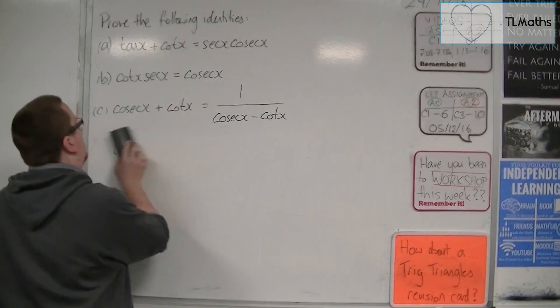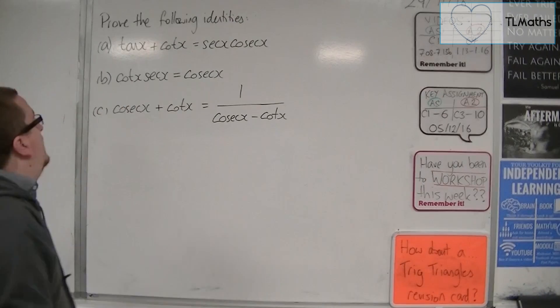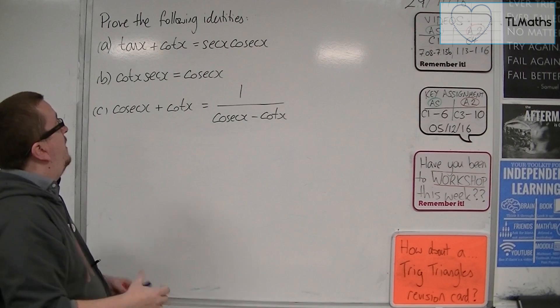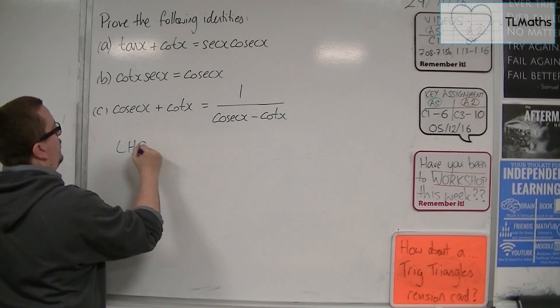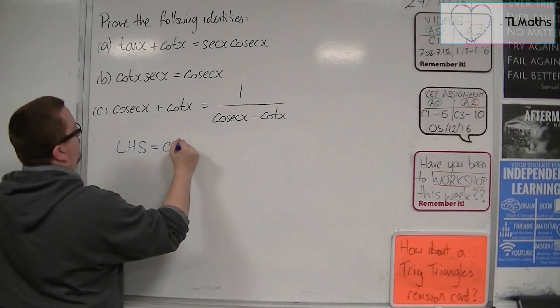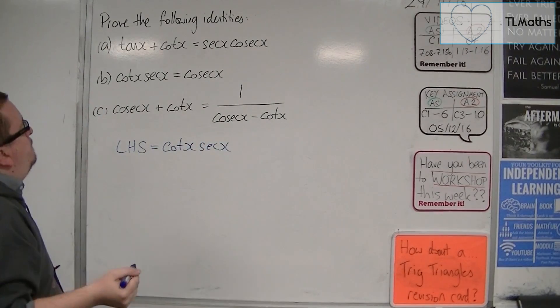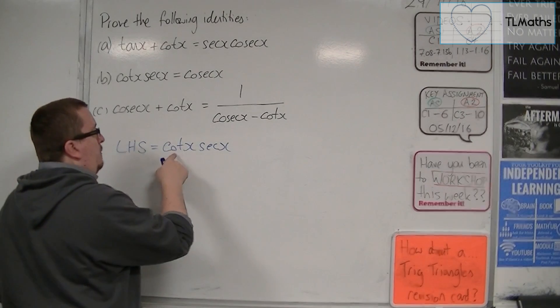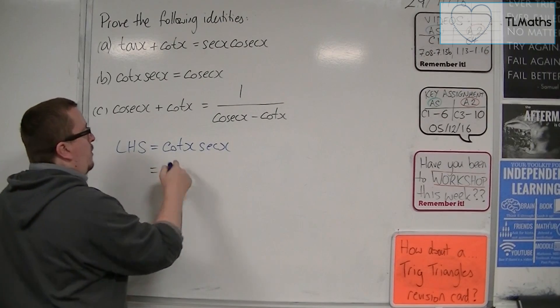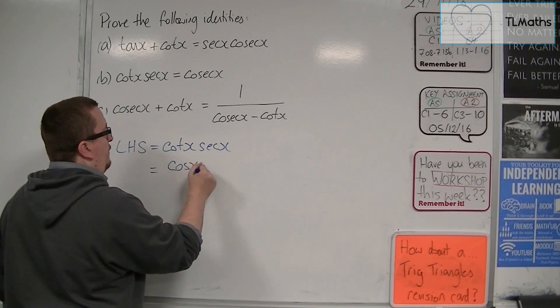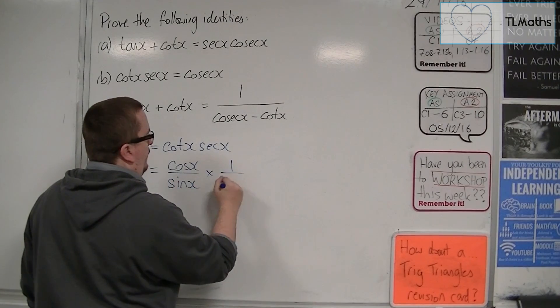Let's have a look at the second one. Cot x sec x is equal to cosec x. If we just start with the left-hand side, the most complicated-looking side. In this one, I'm going to jump into sines and cosines. So cot is cos over sine. Sec is one over cos.